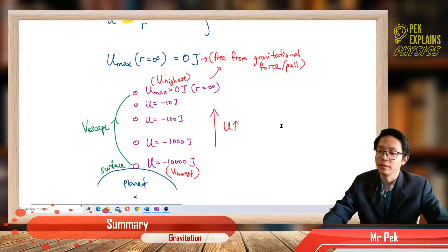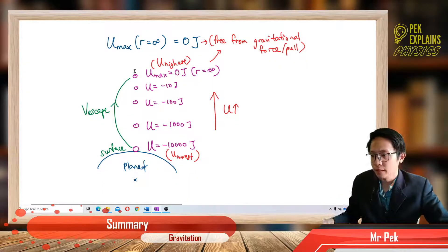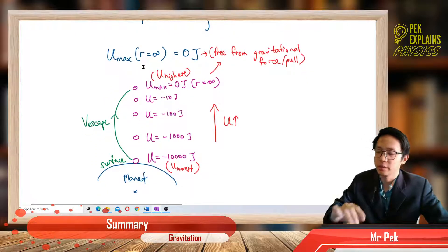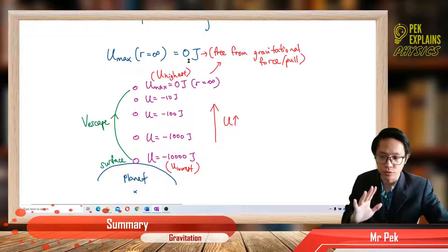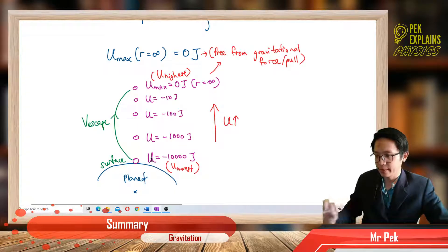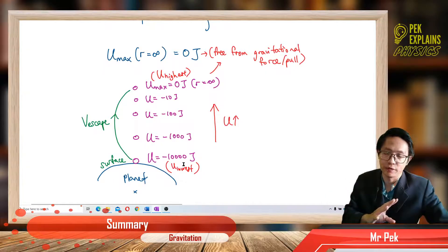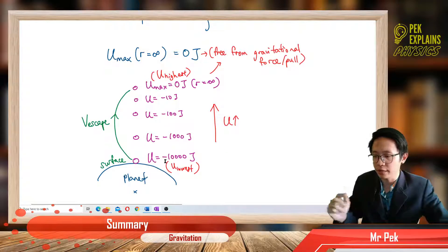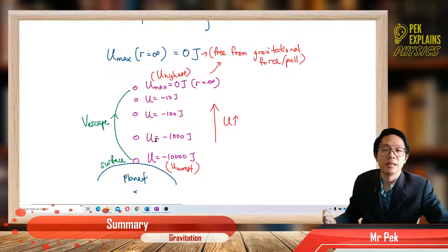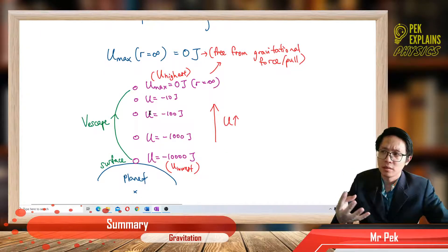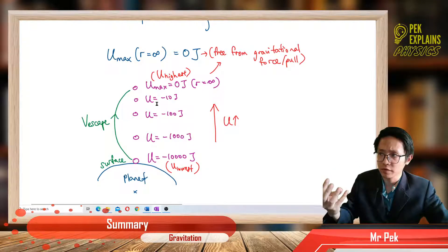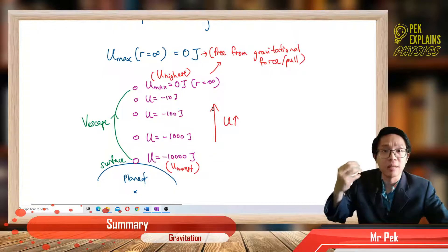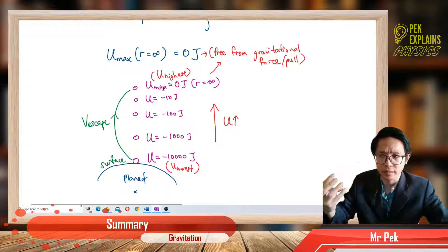Why this time do we have a negative? The maximum potential energy in our context is at R equals infinity, which is zero Joule. Zero Joule means it is free from gravitational force or gravitational pull. At the surface, the potential energy is considered to be most negative. As it goes higher and higher, the potential energy becomes less and less negative. In mathematics, when a value becomes less and less negative, it means the potential energy is actually getting bigger and bigger — the value increases.